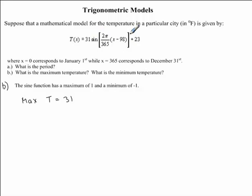we know that the sine function will take on its maximum value when we are dealing with the maximum temperature. So, in fact, this sine function will simply equal 1. And lastly, we need to add 23. 31 times 1 gives us 31, plus 23, is equal to 54.